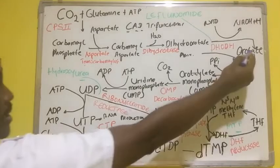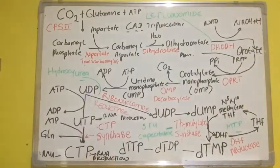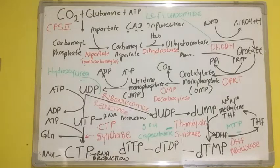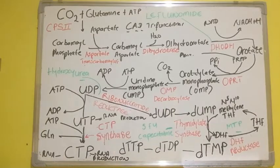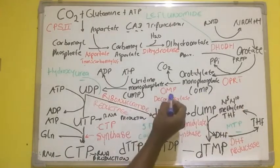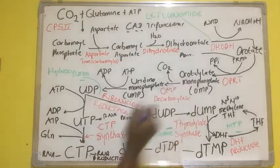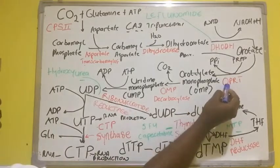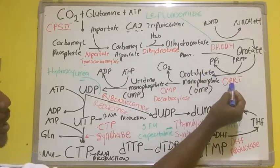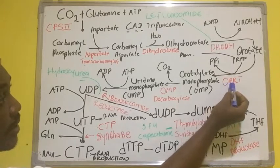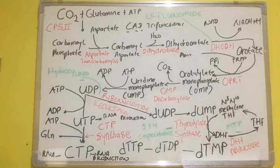Orotic acid is being converted to UMP through the enzyme UMP synthase. This UMP synthase is a combination of OMP decarboxylase and OPRT, which stands for orotate phosphoribosyltransferase.